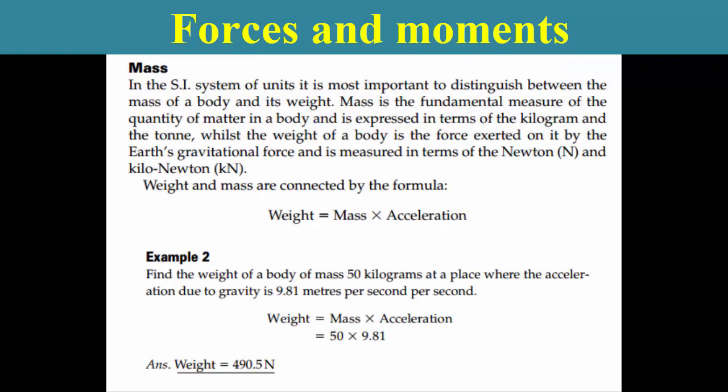Mass: in the SI system of units, it is important to distinguish between the mass of a body and its weight. Mass is the fundamental measure of the quantity of matter in a body, expressed in kilograms and tons. The weight of a body is the force exerted on it by the Earth's gravitational force, measured in Newtons (N) and kilonewtons (kN). Weight and mass are connected by the formula: weight equals mass multiplied by acceleration.